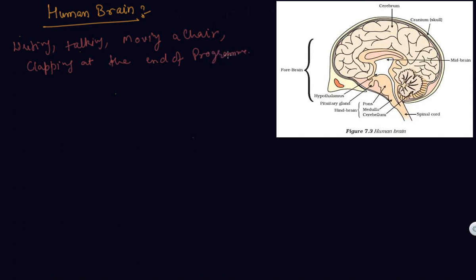These are examples of voluntary actions which are based on deciding what to do next. The brain also has to send messages back to the muscles on how to respond to a particular type of situation.